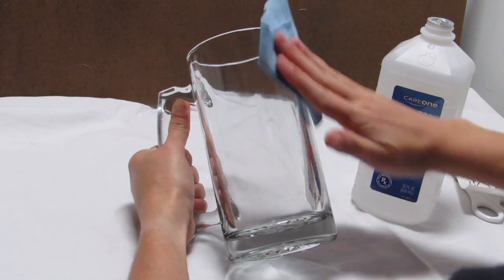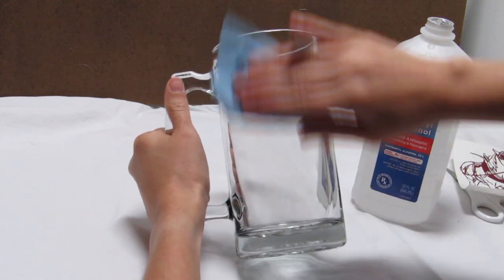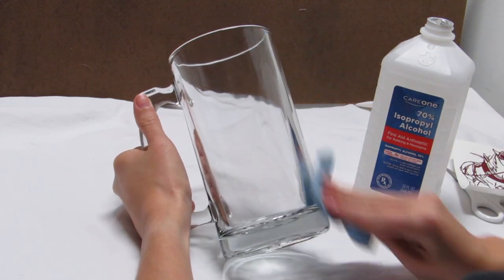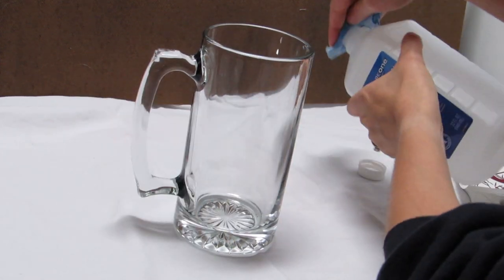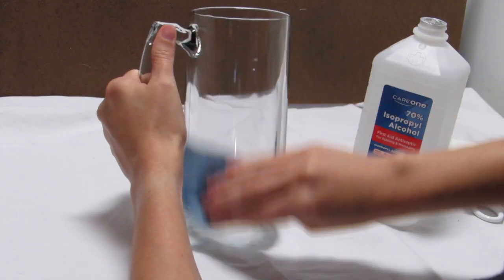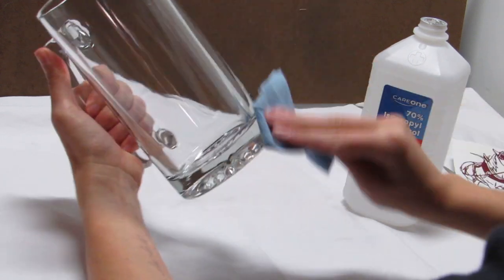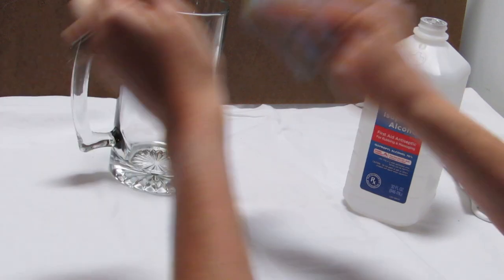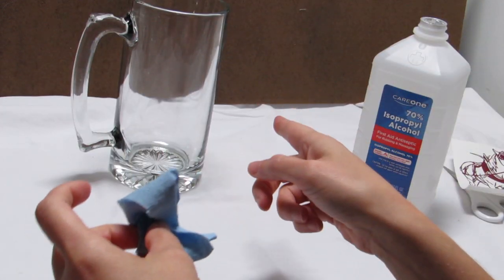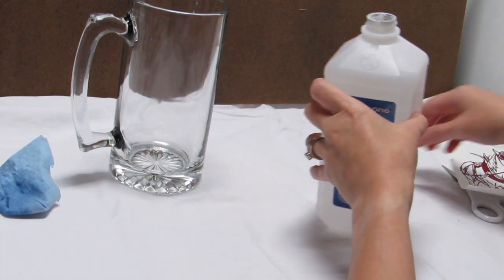I actually went and got my new bottle of alcohol because I didn't want any contaminants in it of any sort. Put some on a paper towel or something that's not going to shed any fibers. And you want to wipe down the entire area of where you're going to apply your decal. This is very important. This will ensure that there is good adhesion between the decal and the glass and prevent it from peeling and easily lifting. Make sure you wipe it down real good and let that dry. Make sure that it's completely dry before you apply anything to it.